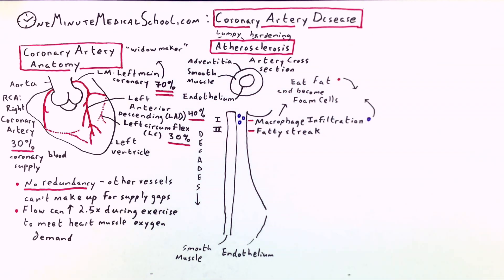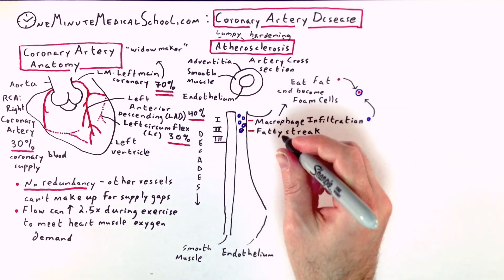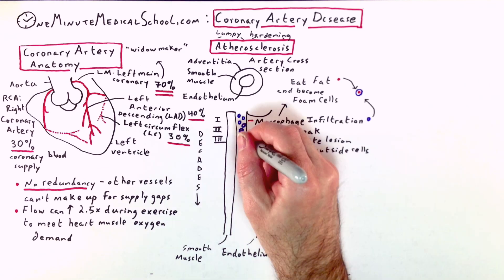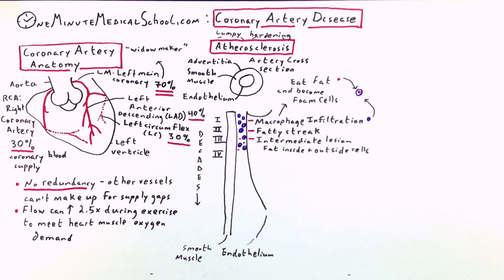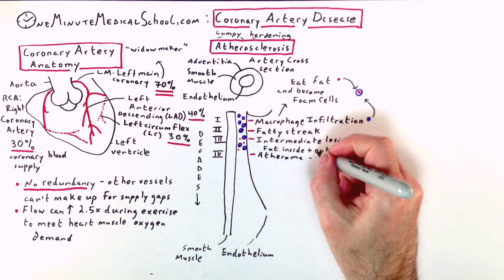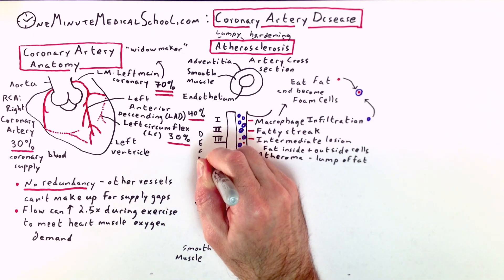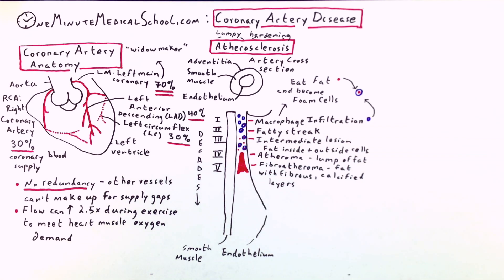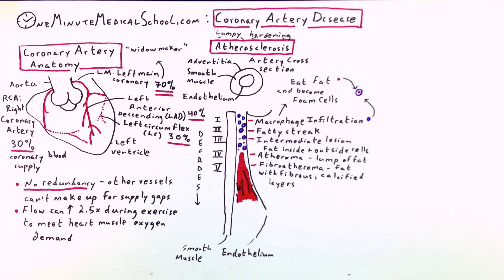The intermediate lesion is when the macrophages can't eat all the fat and you get lipid pools forming outside of the foam cells. This then goes on to the atheroma, which is when the fat coalesces into a lump. Finally, fibroatheroma is a calcified fibrotic lesion.